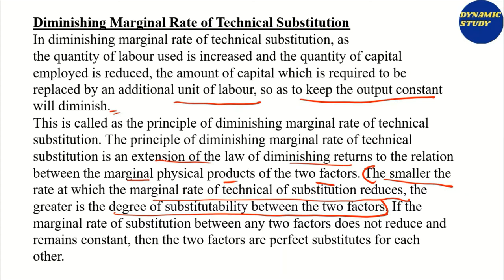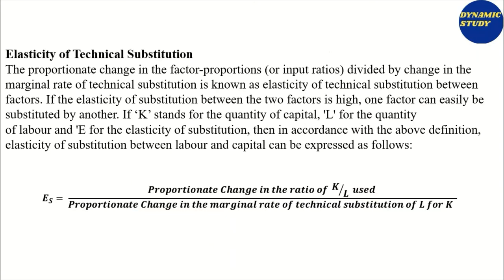The smaller the rate at which the marginal rate of technical substitution reduces, the greater is the degree of substitutability between the two factors. If the marginal rate of technical substitution between the two factors does not reduce and remains constant, then the two factors are perfect substitutes.